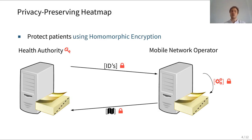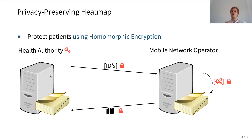The first privacy-enhancing technology we use is homomorphic encryption. When the health authority sends its identifiers of who is infected to the mobile network operator, it uses a homomorphic encryption scheme to encrypt this input vector. So the input is encrypted and the mobile network operator cannot learn who is infected. But since it is a homomorphic encryption scheme, it can still combine this encrypted vector with its location data matrix and produce an encrypted version of the desired heat map. It then sends the encrypted heat map back to the health authority, who holds the secret decryption key and is the only one who can obtain the final heat map. Homomorphic encryption thus protects the patient identifiers, and since location data is combined with the homomorphic ciphertext, the location data is also not leaked.